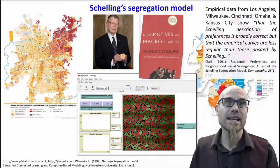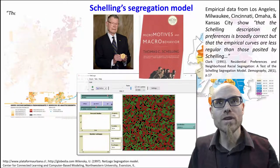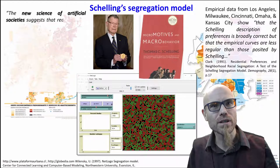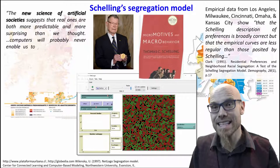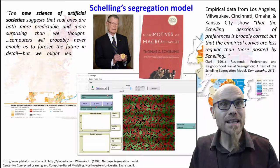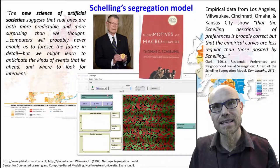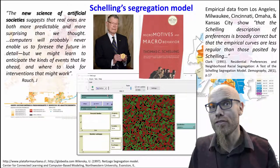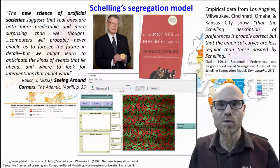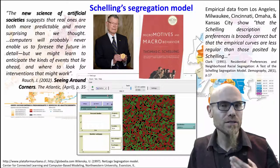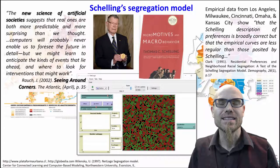Summing up: the new science of artificial societies suggests that real ones are both more predictable and more surprising than we thought. Computers will probably never enable us to foresee the future in detail, but we might learn to anticipate the kind of events that lie ahead and where to look for interventions that might work. The idea is not to build a one-to-one map, but to have a theoretical understanding and look for interventions that might work.